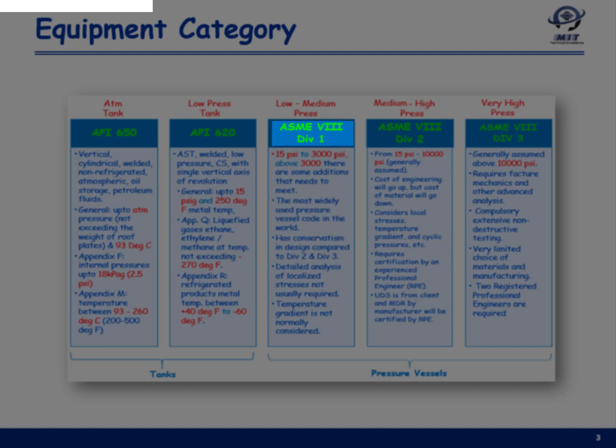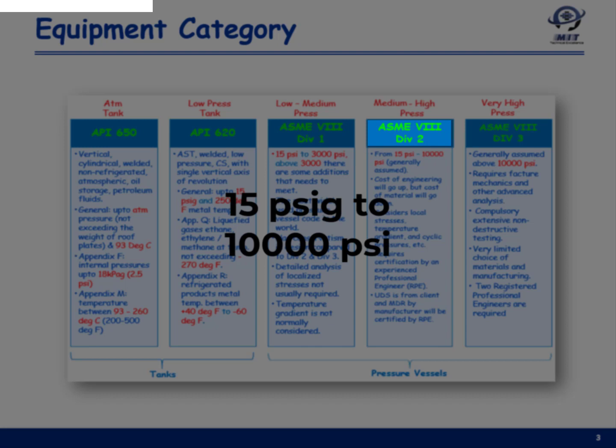There are additional rules that apply for pressure ranges above 3000 psi gauge in Division 1. Then we switch to Division 2, which is an alternate to Division 1 and covers medium to high pressure range — typically from 3000 to 10,000 psi gauge, though as the code itself suggests it can be applied from 15 psi gauge to 10,000 psi or even higher. When cyclic loading is present, Division 2 must be used even at lower pressures below 3000 psi.